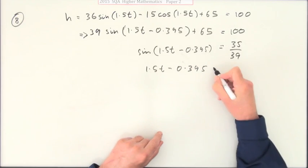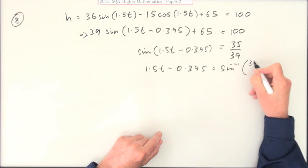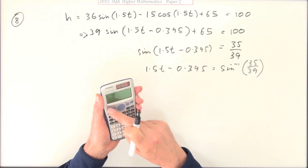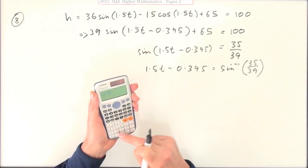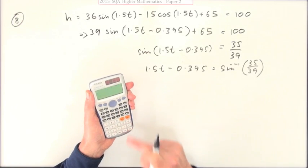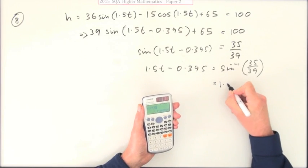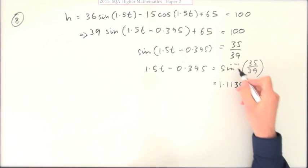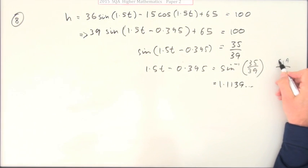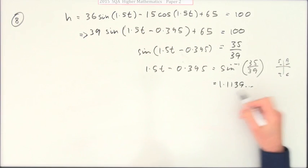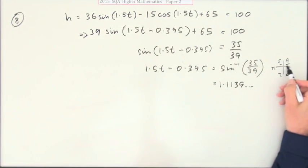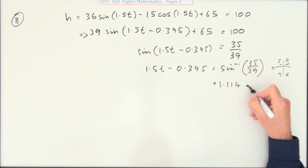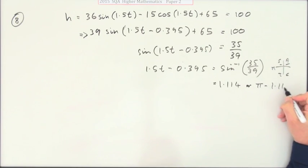1.5t minus 0.395 will be the inverse sine of 35 over 39. You're in radians, hopefully. So it's just a case of shift sine of 35 over 39. And you get, and you know this is one of the answers, 1.1139, et cetera. Oh, I've done it now. Or, the sine's positive. You can either think of all sine, tan, cos, so it's going to be here and here. Or, but you're in radians, so that's pi. Or the other one short of pi. So it's either that, which I think I'll just round off now to 1.114. Or pi minus 1.114.